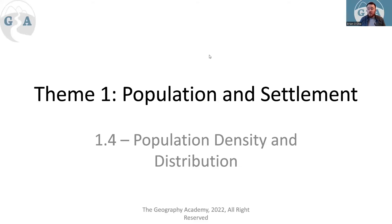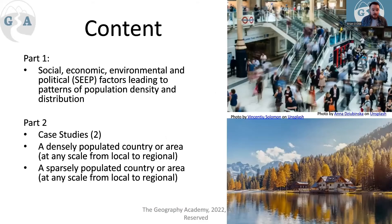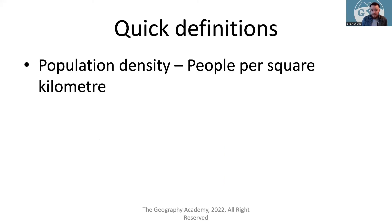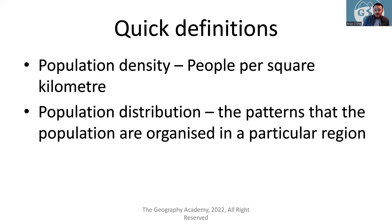We're on to section 1.4 of Population and Settlement, which is about population density and distribution. This is a relatively short section, so we're going to get through everything in one video. We're going to look at the social, economic, environmental, and political factors leading to population density and distribution, and then we're going to look at a case study.